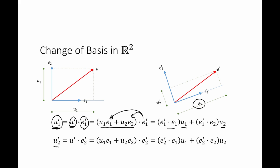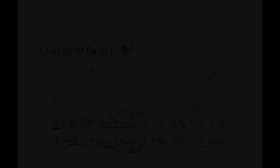Similarly, u prime 2 equals u prime dot e prime 2. Using the representation u1·e1 plus u2·e2, dotted with e prime 2, and using the linearity and symmetry of the dot product, I get: u prime 2 equals (e prime 2 dot e1)·u1 plus (e prime 2 dot e2)·u2.